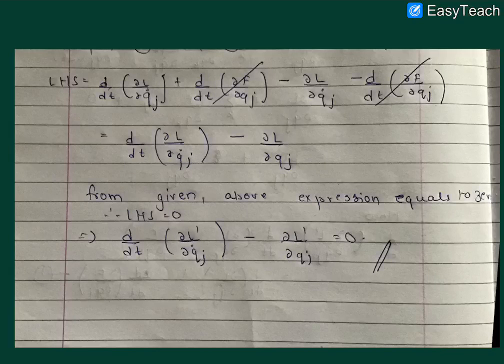So our LHS becomes: total derivative of ∂L/∂Q̇_j plus total derivative of ∂F/∂Q_j minus ∂L/∂Q_j minus ∂L/∂Q_j.